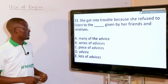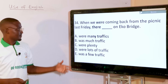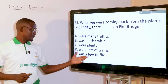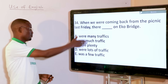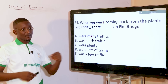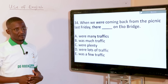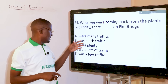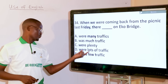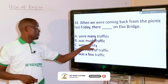When we were coming back from the picnic last Friday, the dash on the co-bridge were many traffics, was much traffic, were plenty traffic, were lots of traffic, was very few traffic. Traffic cannot be pluralized, so any option with S is out. The answer is was much traffic — we use much for uncountable nouns. Many is for countable; much is for uncountable. Lots of traffic would need to be a lot of traffic, making option D incorrect. There was much traffic on the co-bridge.